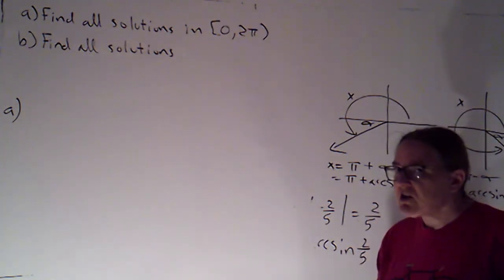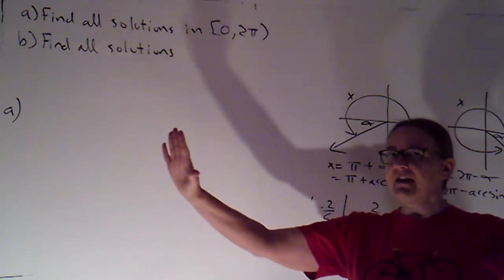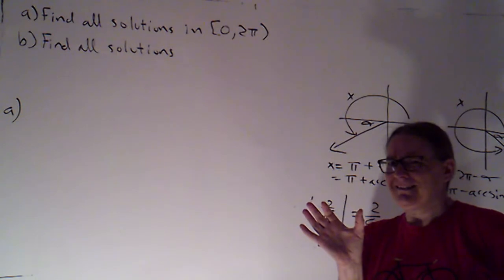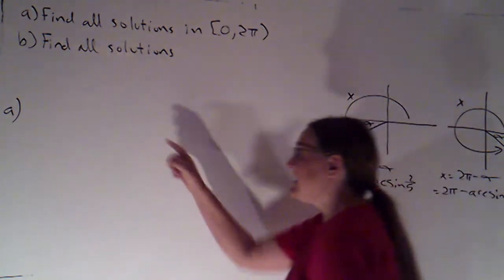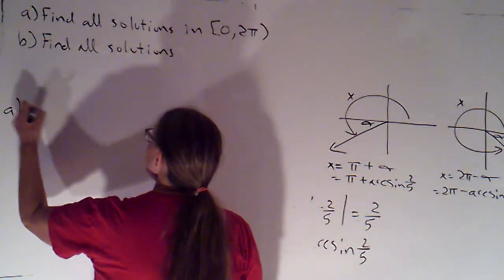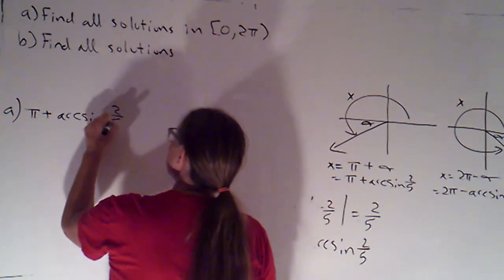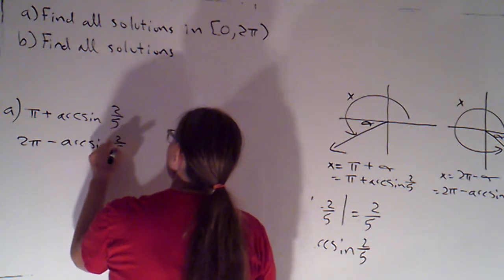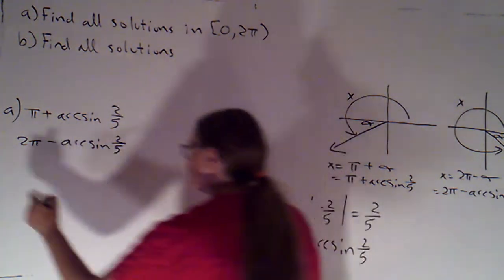Sometimes people feel like a calculator is more precise because it gives you decimal digits. But the decimal digits are almost always going to go on forever and ever. Giving just enough that fit on the calculator screen, that's rounding. That's not more precise. These are my exact answers: π plus arc sine of 2 fifths and 2π minus arc sine of 2 fifths.